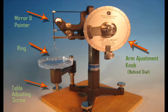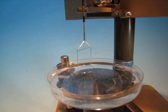The sample table adjusting screw moves the sample surface past the ring. The arm adjustment knob adjusts the arm and pointer to offset the force required to pull the ring through the surface and record this force on the front dial.